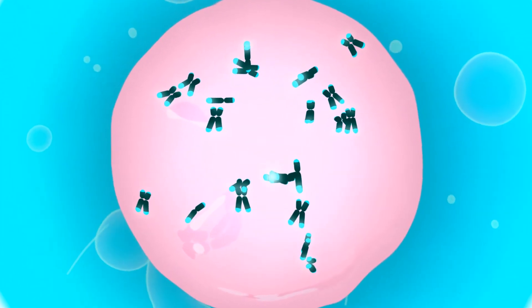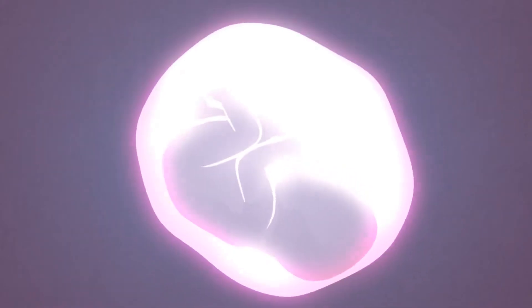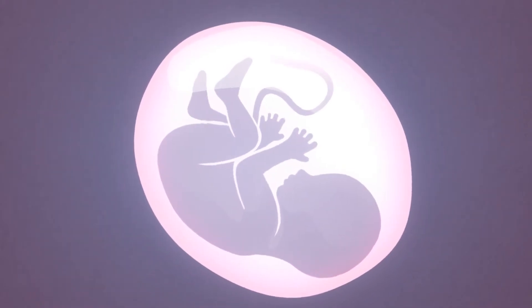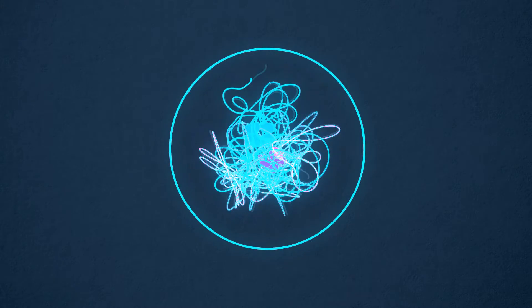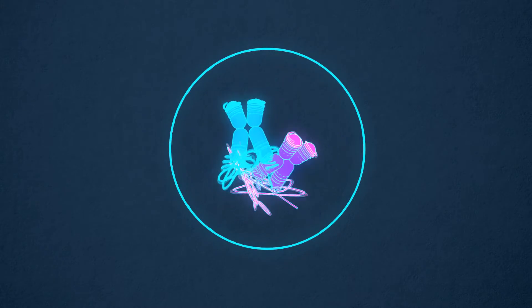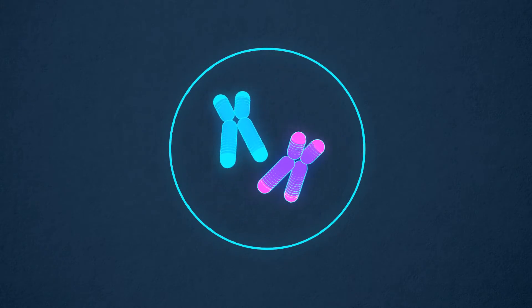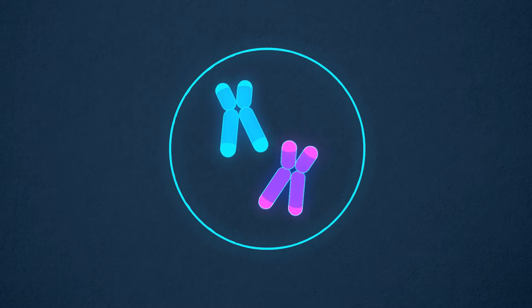These chromosomes encode all the information to make a fully grown human being. When a cell has copied its blueprint completely and ensured that both copies are error-free, the cell starts preparing to divide.